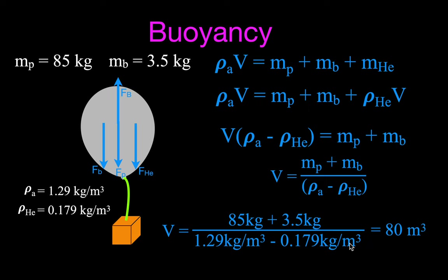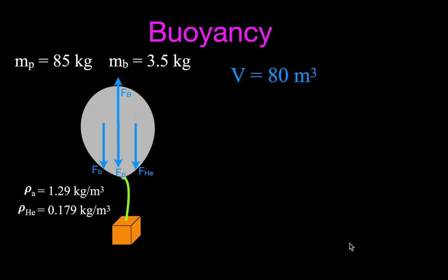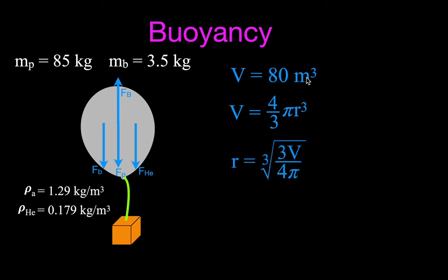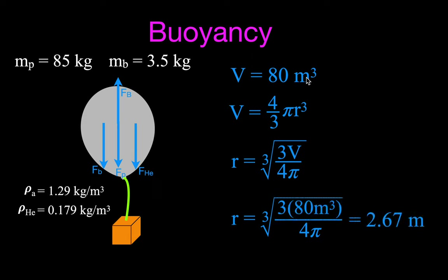Now, 80 cubic meters is hard to picture, so we'll find the radius of the balloon for a clearer sense of its size. The volume of a sphere is (4/3)π r³. Solving for r gives: the cubed root of (3 times volume divided by 4π). Plugging in volume = 80 m³, we get a radius of approximately 2.67 meters.